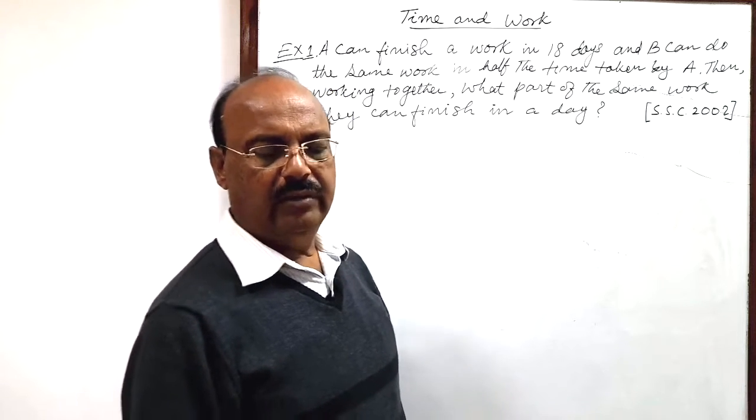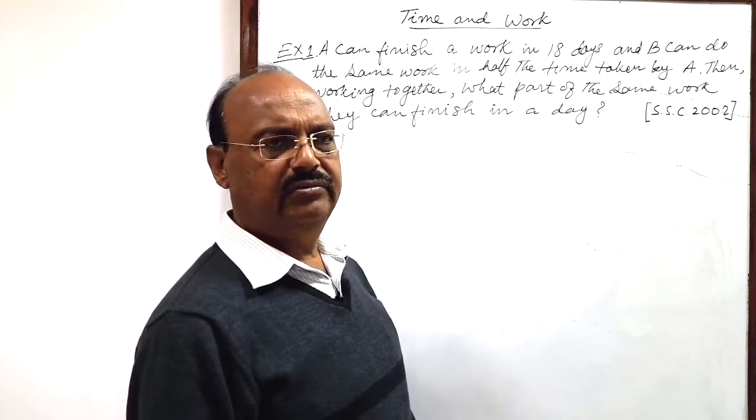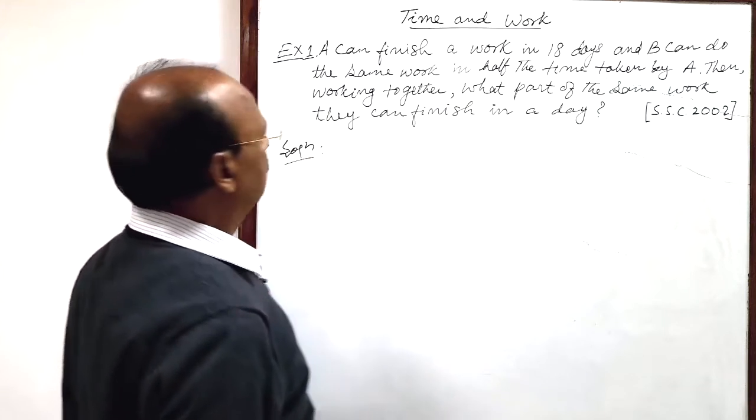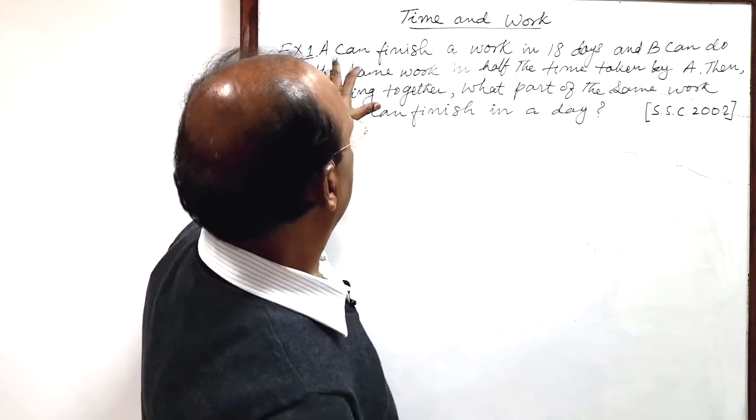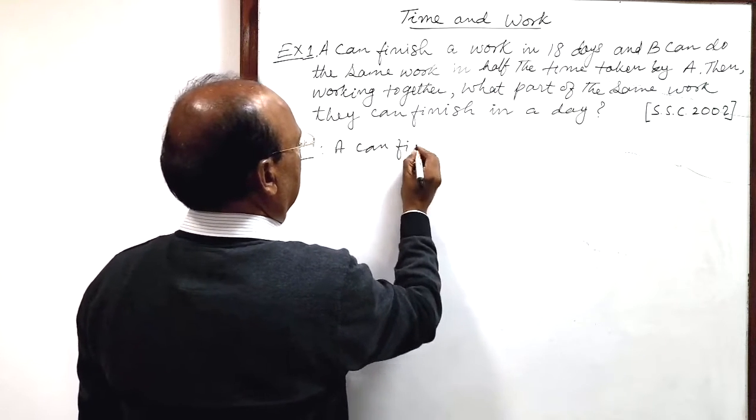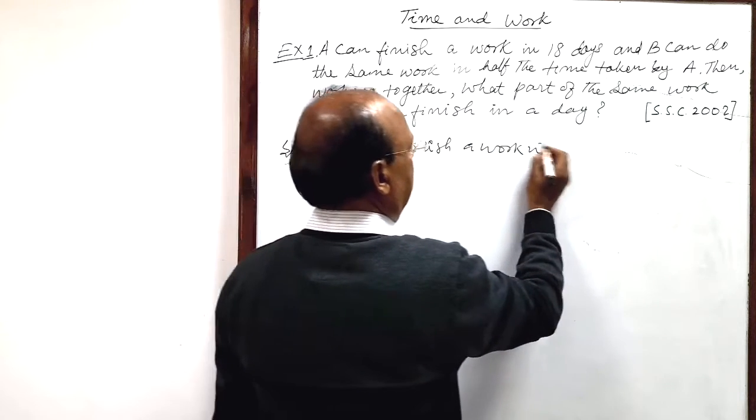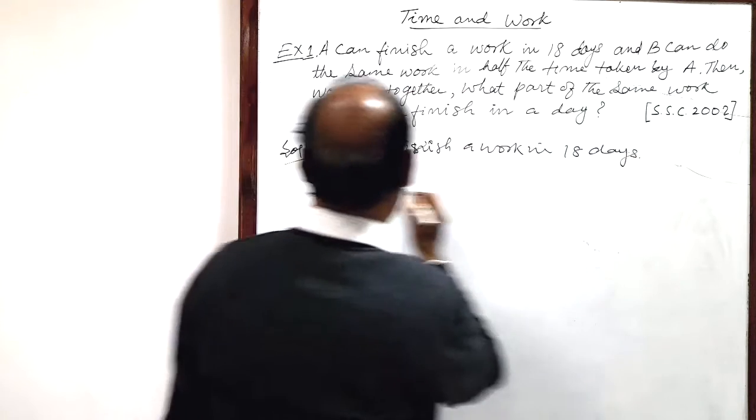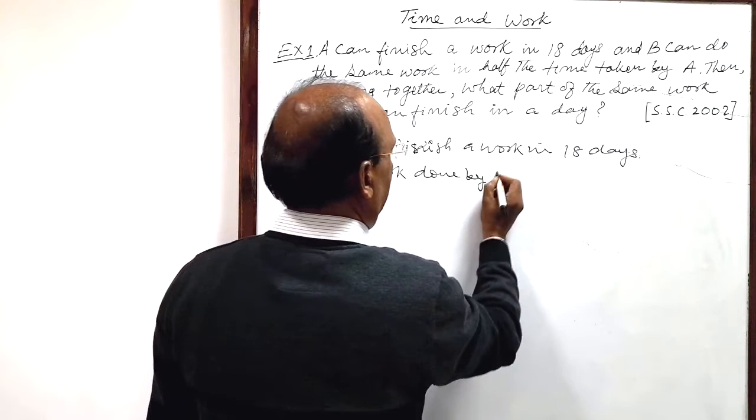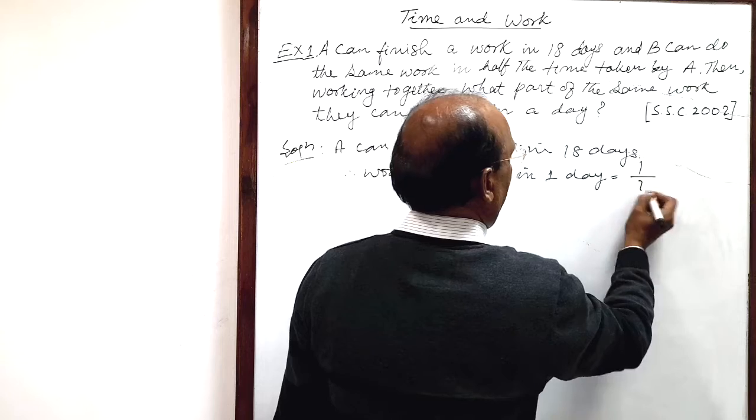Question is very simple and based on unitary method. You see the solution, we can do it very easily. First of all, we see A can finish a work in 18 days. So therefore, work done by A in one day is how much? 1 by 18.